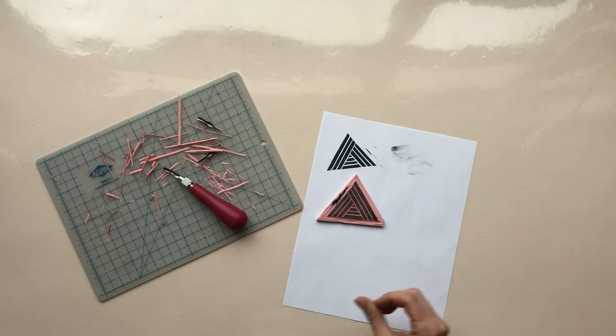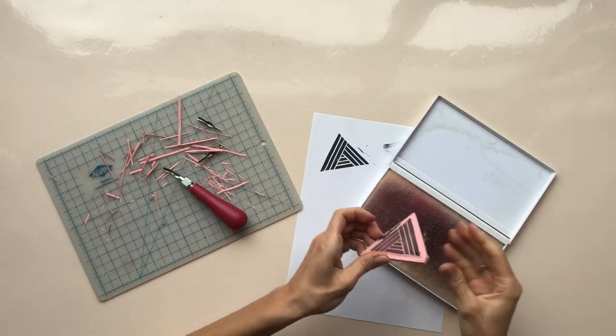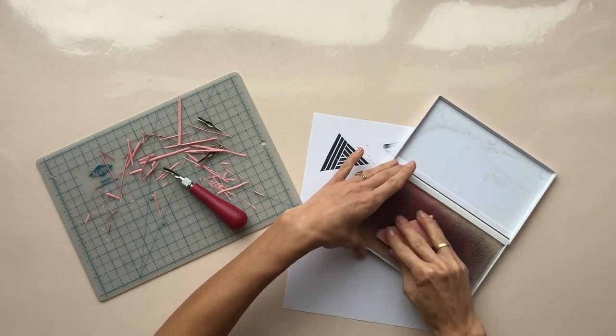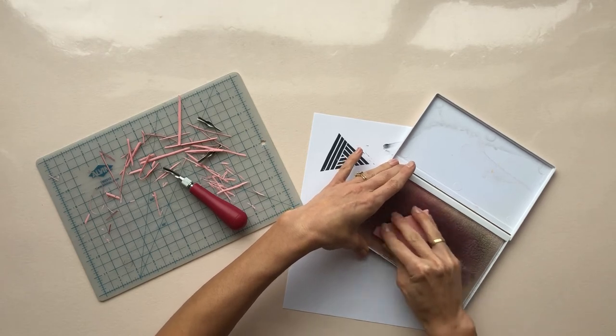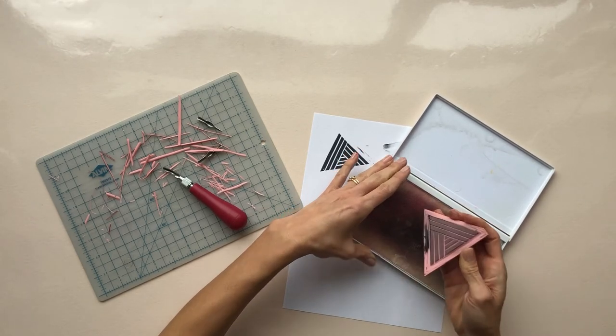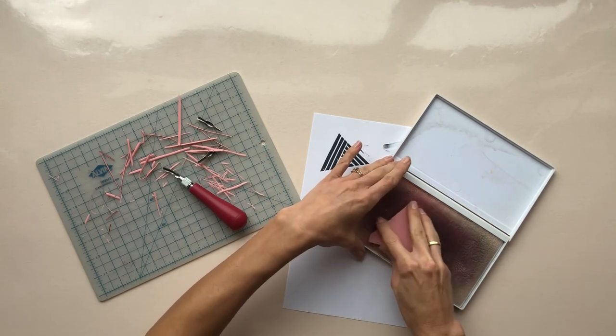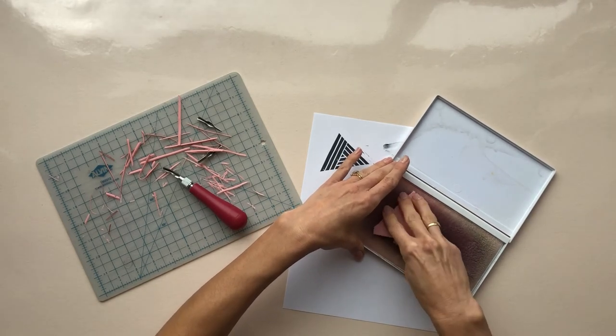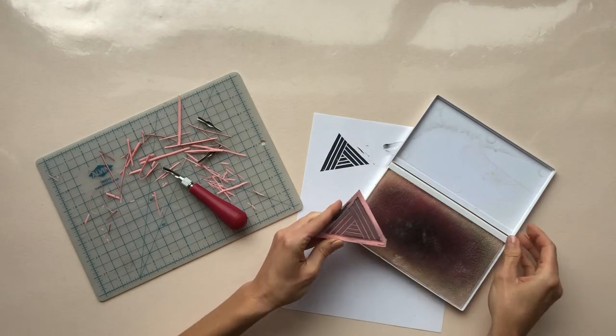I am going to clean up my stamp a little bit here so that it's a little less messy when I'm carving. But they'll still be a little bit of that black there so I'll be able to see it. You want to keep your stamps clean. They will get stained from the ink but that's okay.